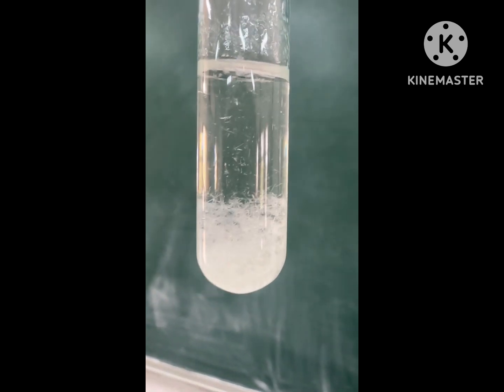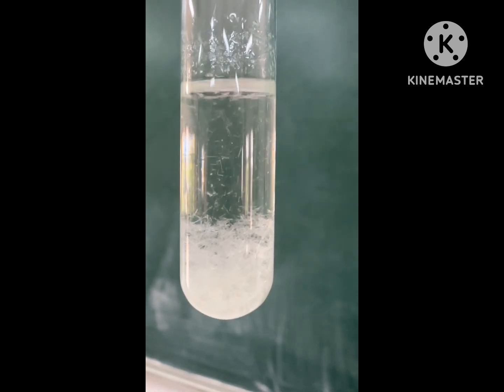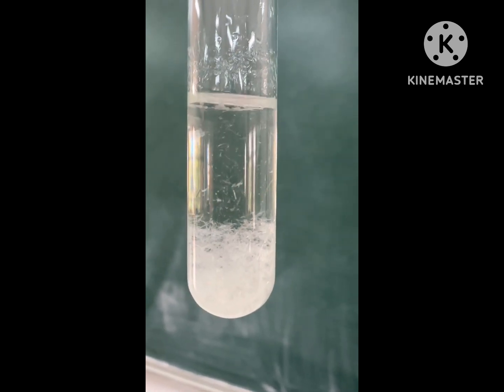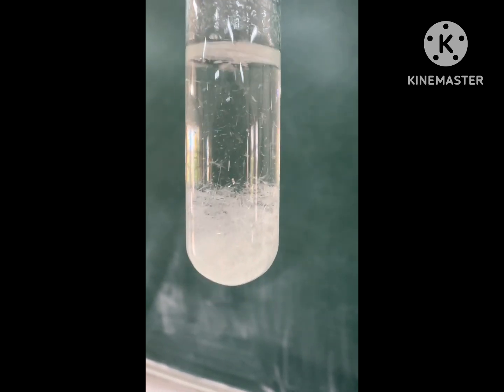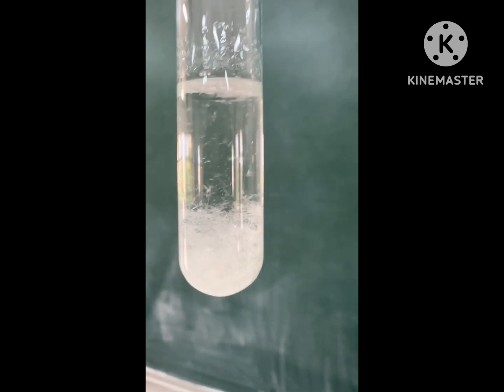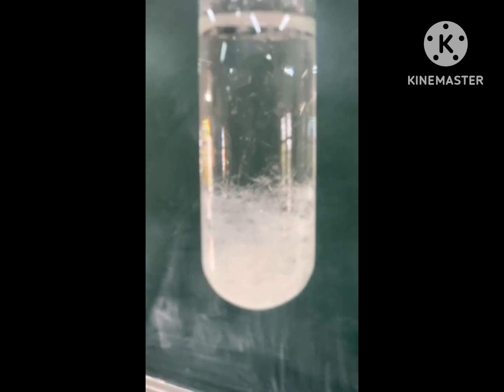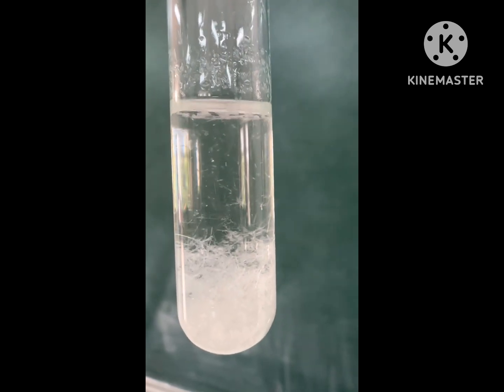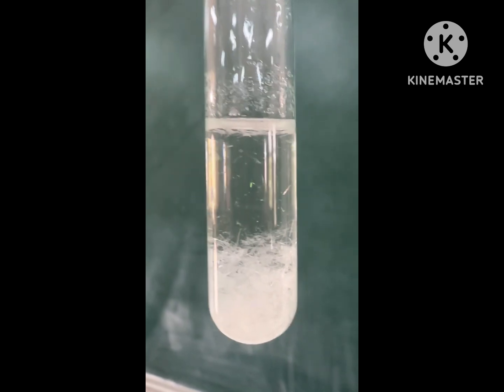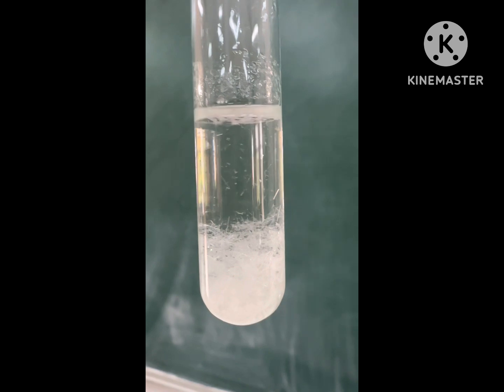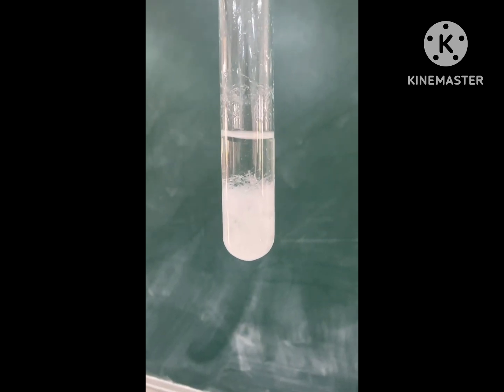So now from the reaction we have got dimethyl fumarate, the trans isomer, which is a white solid. So this reaction demonstrates cis-trans conversion. The cis dimethyl maleate in presence of sunlight and bromine has now converted to trans isomer. The cis isomer was a liquid as we have seen in the beginning of the video.